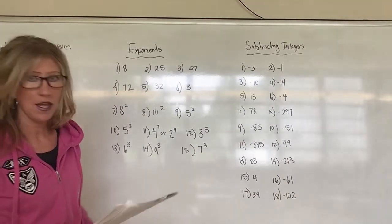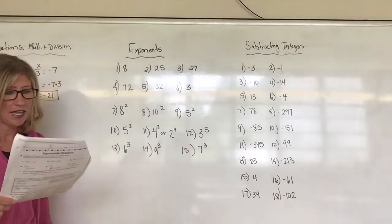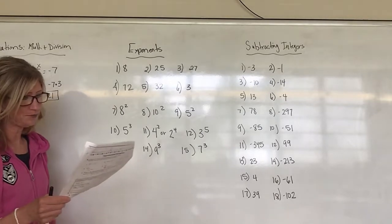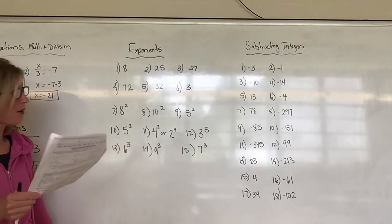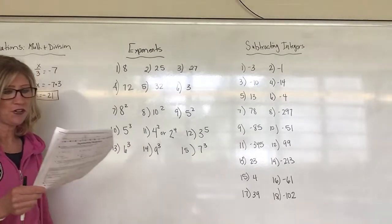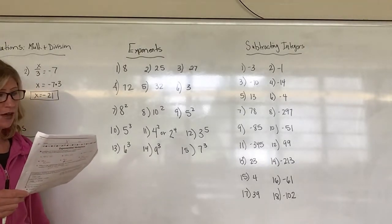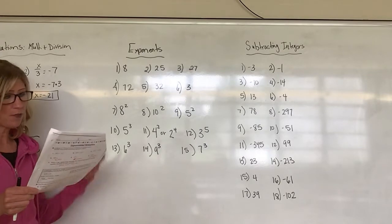I did a couple with you but here we go: number 1 is negative 3, number 2 is negative 1, number 3 is negative 10, number 4 is negative 14, number 5 should come up with 13, and number 6 is negative 4.